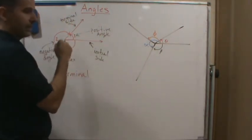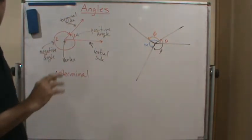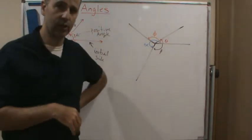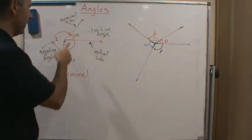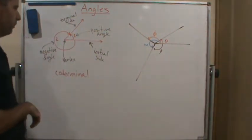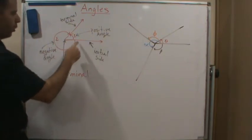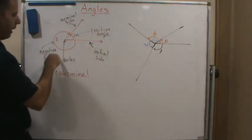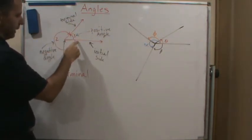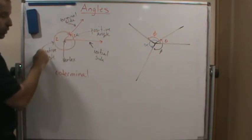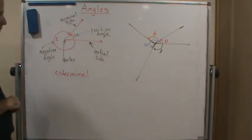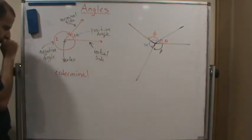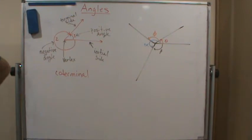The positive angle always goes in the counter-clockwise direction — that is always the positive angle. If we go the other direction, clockwise from the initial side, that is called a negative angle.